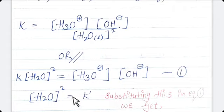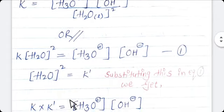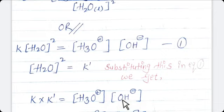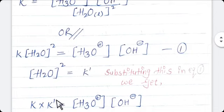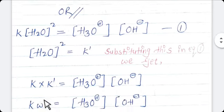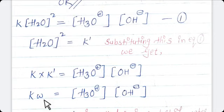Substitute this value in equation 1. So we get K × K' equal to the concentration of H3O⁺ times the concentration of OH⁻. This K × K' we can call the ionic product of water, and it is denoted by Kw. So Kw is nothing but the ionic product of water — the product of molar concentration of hydronium ion and hydroxyl ion at equilibrium in pure water at a given temperature.